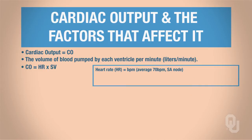First, heart rate. Heart rate is measured as beats per minute, abbreviated BPM. The average heart rate is about 70 beats per minute, and the heart rate is set by the SA node.